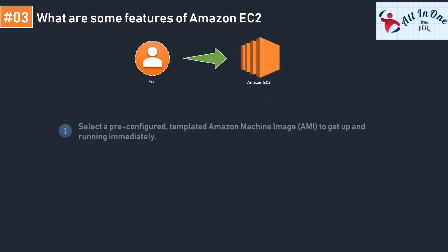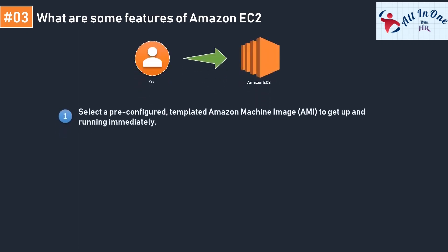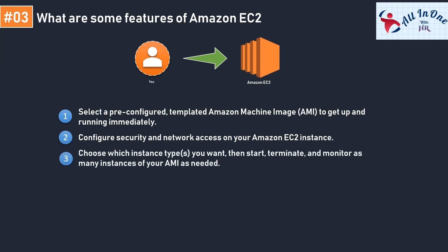The first major feature Amazon EC2 provides is a pre-configured templated Amazon Machine Image, or AMI. The AMI provides the information required to launch an instance. If you've used a Docker image before, you know that an image is built from instructions for a complete executable version of an application. You run the image to start an instance — it's like a blueprint. You can spin off, terminate, and monitor as many instances as you want from the AMI.